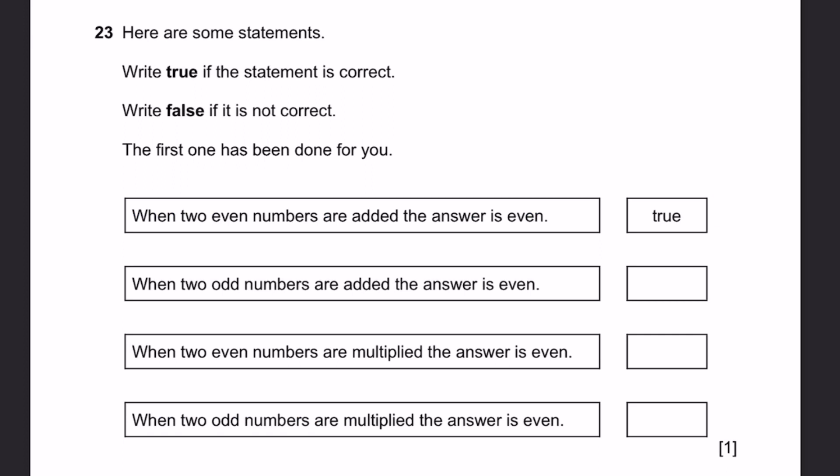Question 23. Here are some statements. Write true if the statement is correct, and false if it's not. When two even numbers are added, the answer is even. That's true. You can use examples: 2 plus 4, both are even, the answer is 6 even. When two odd numbers are added, the answer is even. That's also true, because 3 plus 5 is 8, and that's even. When two even numbers are multiplied, the answer is even. This is also true, because 2 into 4 is 8, or 4 into 8 is 32.